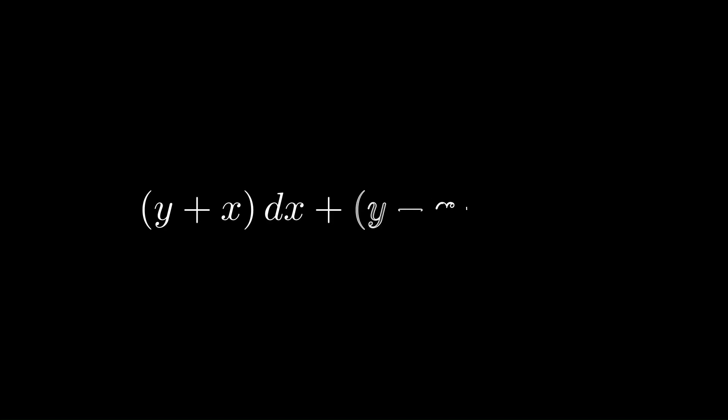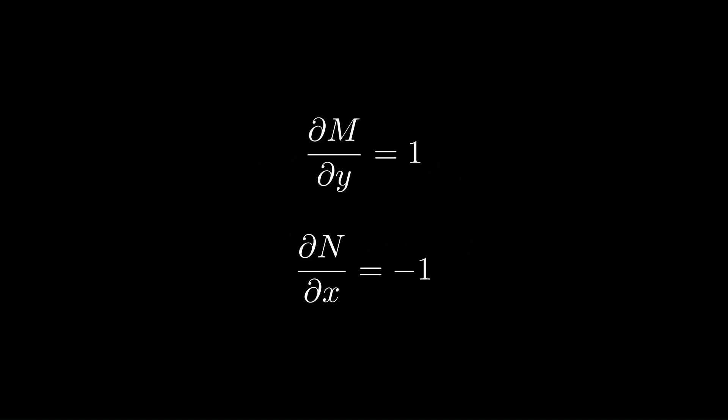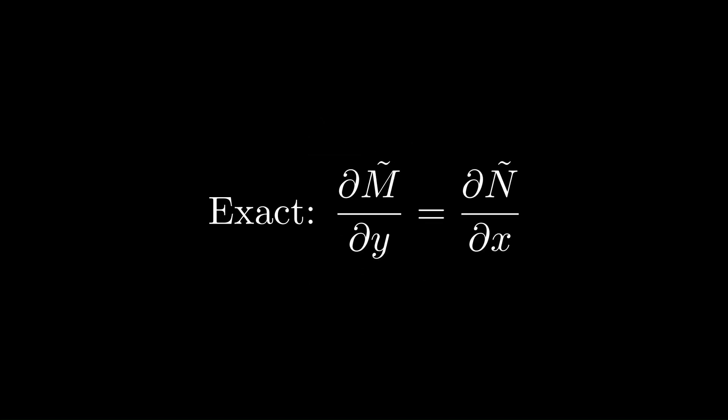Next is the non-exact ODE. We have (y + x) dx + (y − x) dx = 0. Taking partial derivatives of M and N, just like with the exact ODE, we see they are different — so it is not exact.